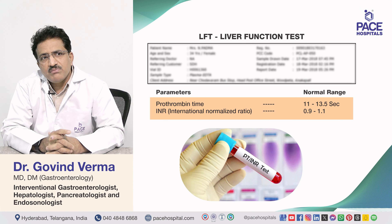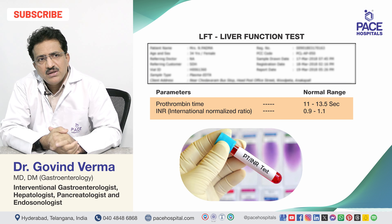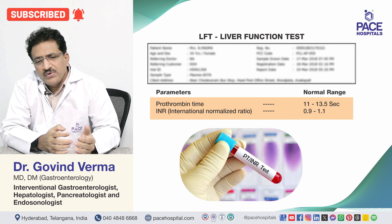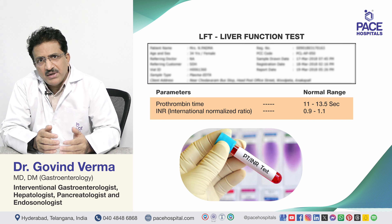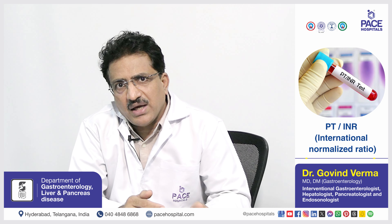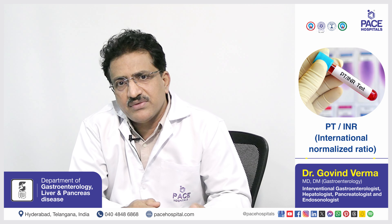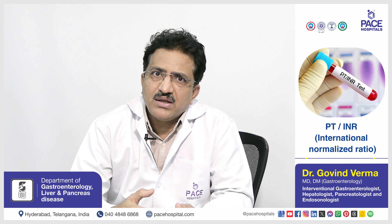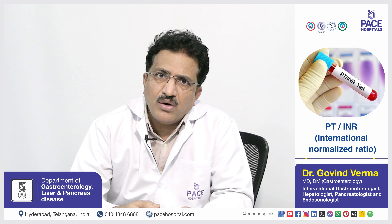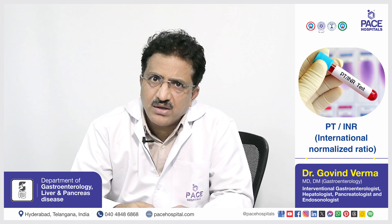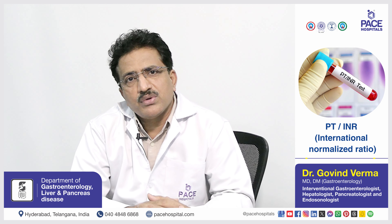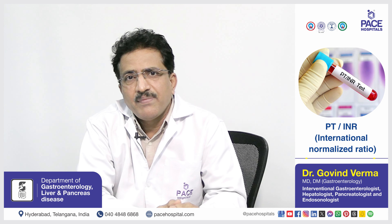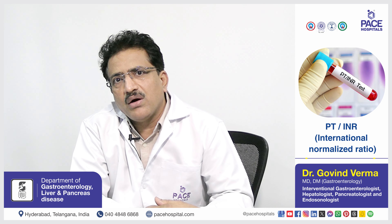Prothrombin time (PT) is another important liver function parameter. INR (international normalized ratio) is now the standardized way to express prothrombin time, since PT values can vary between laboratories. INR reflects the synthetic function of the liver. In patients with biliary tract obstruction or hepatocellular dysfunction or jaundice, prothrombin time can get prolonged. Other causes of prolonged PT include vitamin K deficiency and anticoagulant therapy.